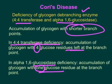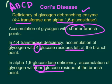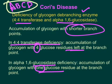To remember: 4-4 transferase deficiency means four glucose residues at the branch point; 1-6 glucosidase deficiency means one glucose residue at the branch point. A useful mnemonic: A-B-C-D — Anderson = Branching enzyme deficiency; Cori = De-branching enzyme deficiency.